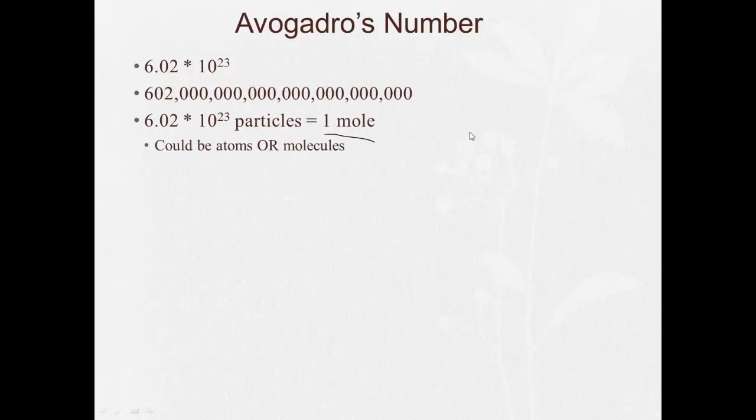So if we're talking just plain old iron atoms, one mole of iron atoms would have 6.02 times 10 to the 23rd atoms. If we're talking about water molecules, one mole of water molecules would have 6.02 times 10 to the 23rd water molecules.